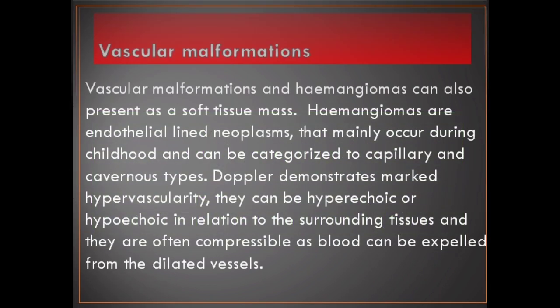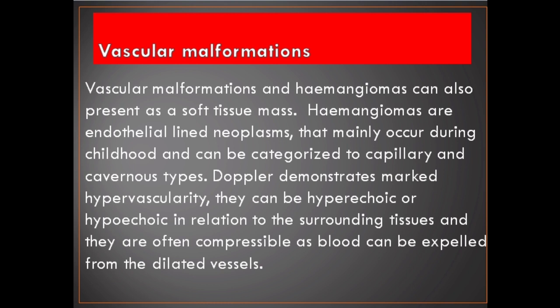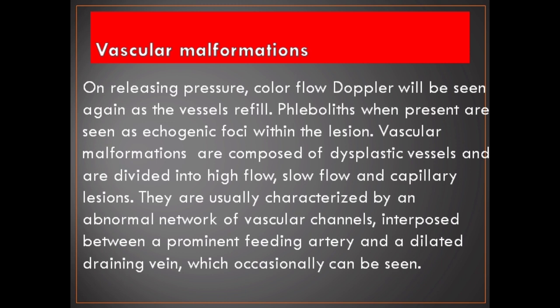Vascular malformations and hemangiomas can also present as a soft tissue mass. Hemangiomas are endothelial-lined neoplasms that mainly occur during childhood and can be categorized into capillary and cavernous types. Doppler demonstrates marked hypervascularity; they can be hyperechoic or hypoechoic and are often compressible as blood can be expelled from the dilated vessels. On releasing pressure, color flow Doppler will be seen again as the vessels refill. Vascular malformations are composed of dysplastic vessels and are divided into high flow, slow flow and capillary lesions, usually characterized by an abnormal network of vascular channels interposed between a prominent feeding artery and a dilated draining vein.